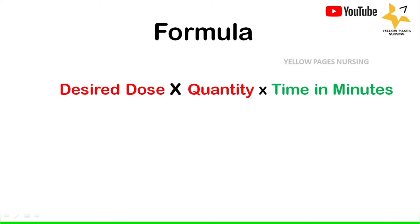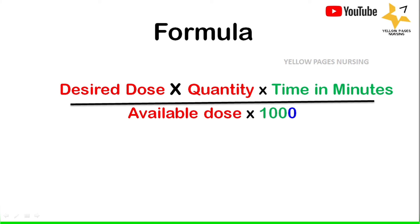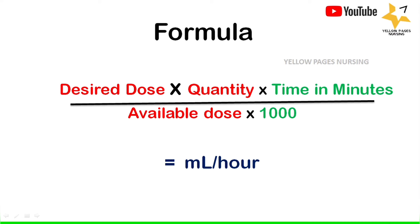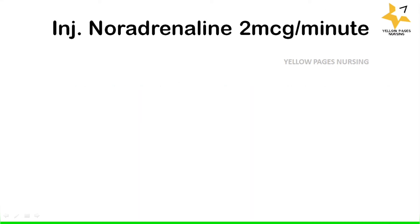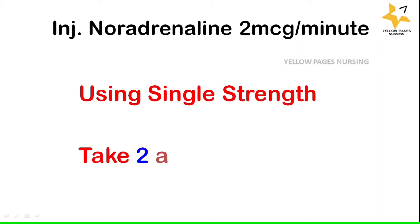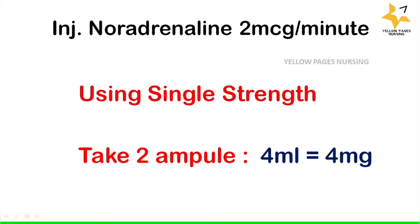The formula for calculation is: desired dose multiplied by quantity multiplied by time in minutes, divided by available dose multiplied by 1000, which gives ml per hour. For the single strength example, we take 2 ampoules containing 4 ml equaling 4 mg of noradrenaline, which becomes the available dose.